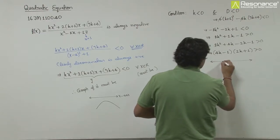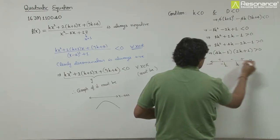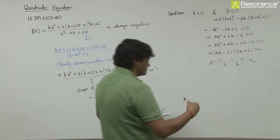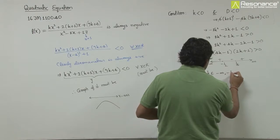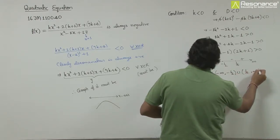Plotting on the number line, we can say that k must belong to (-∞, -1/2) union (1/4, ∞).